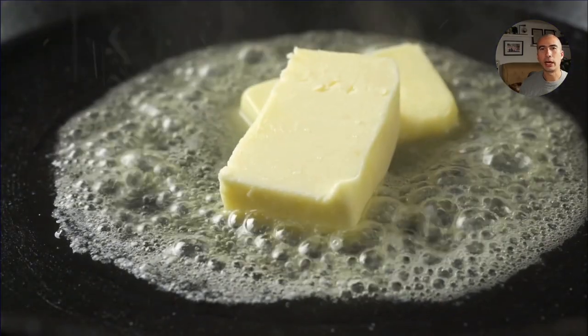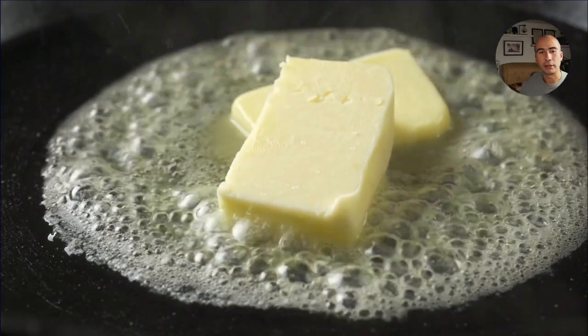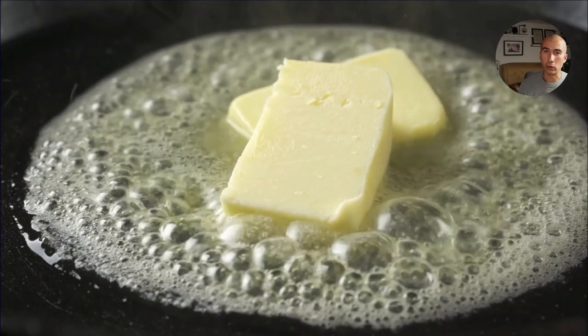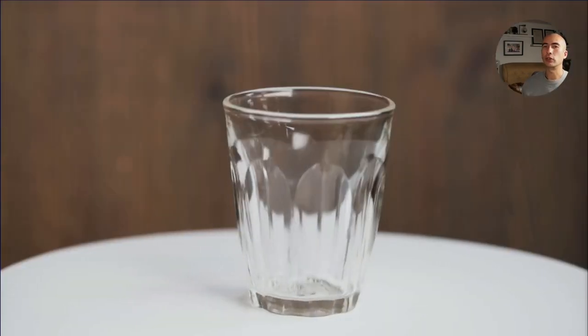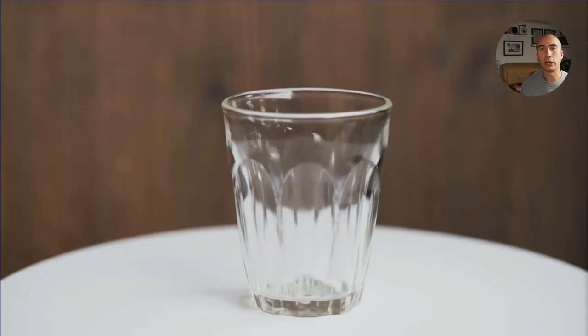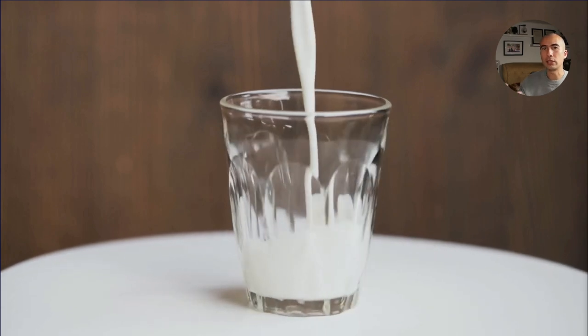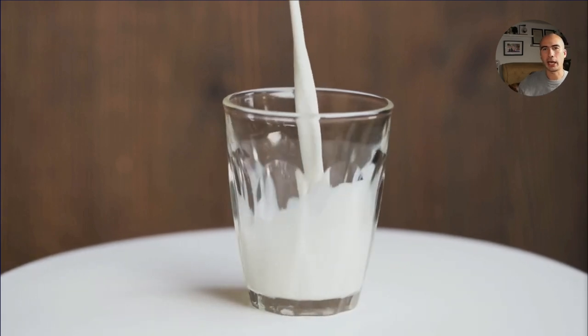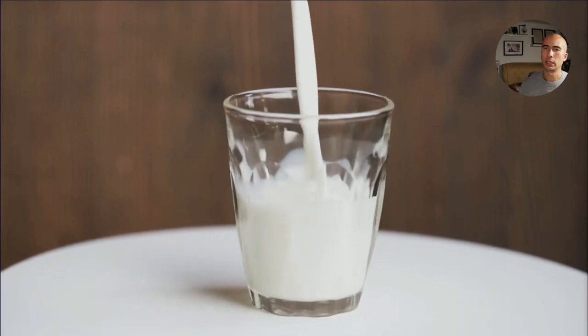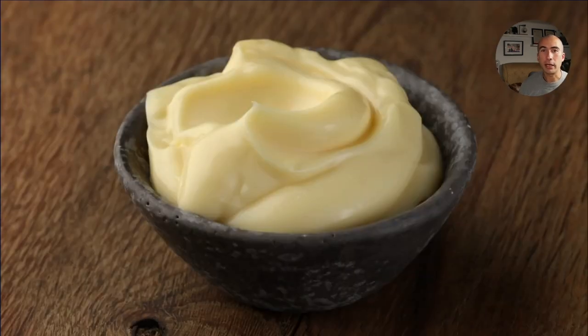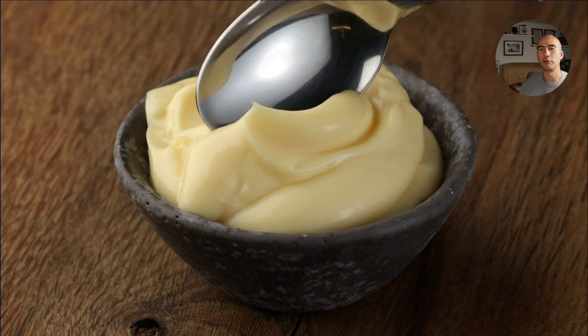Some examples are, for example, butter, which is a water in oil emulsion. Then you've got milk, which is an oil in water emulsion. So the lipids and the fats that come from the cow are suspended in water. Then you've got something like mayonnaise, a very thick and very stable emulsion of both oil and water.